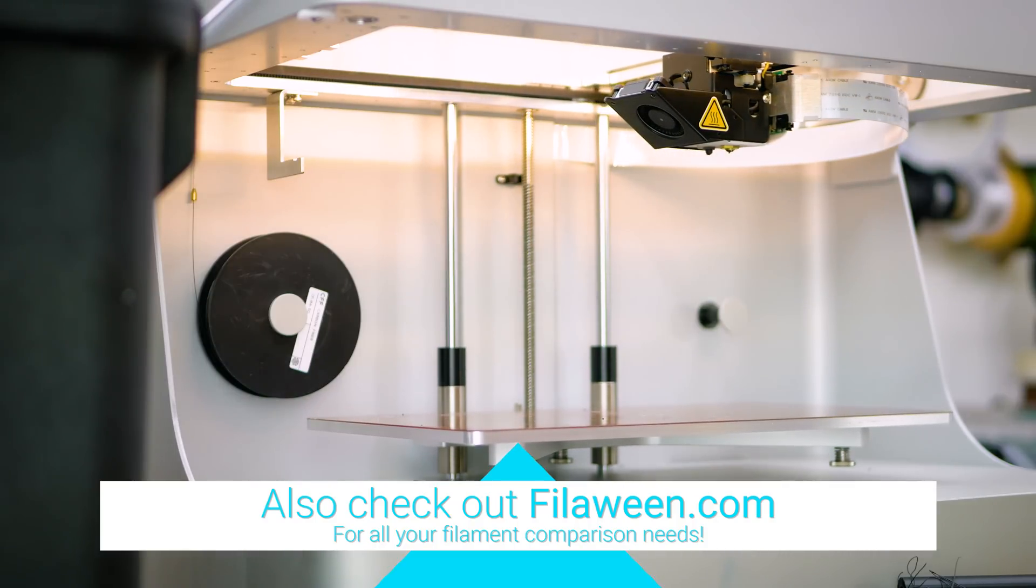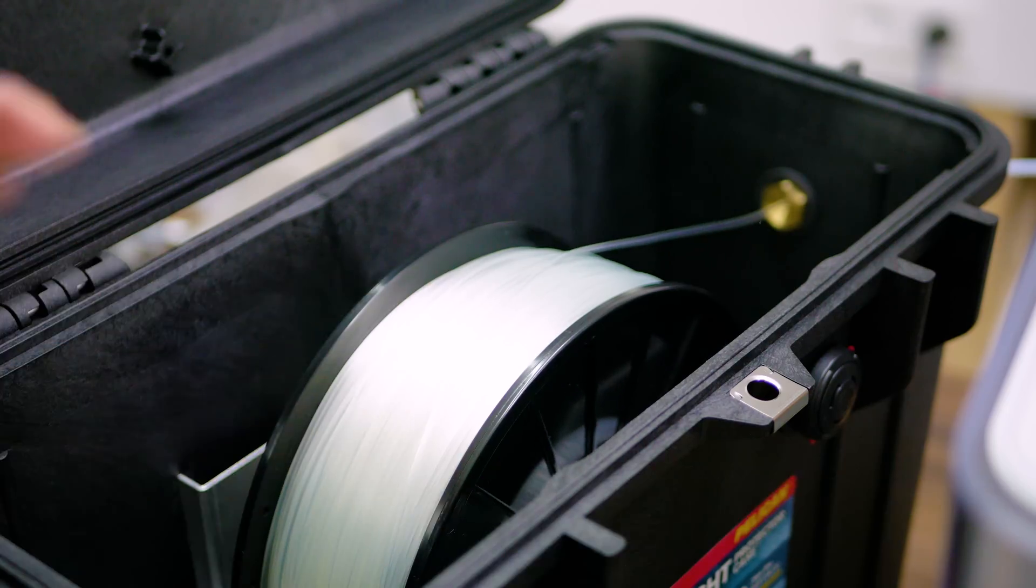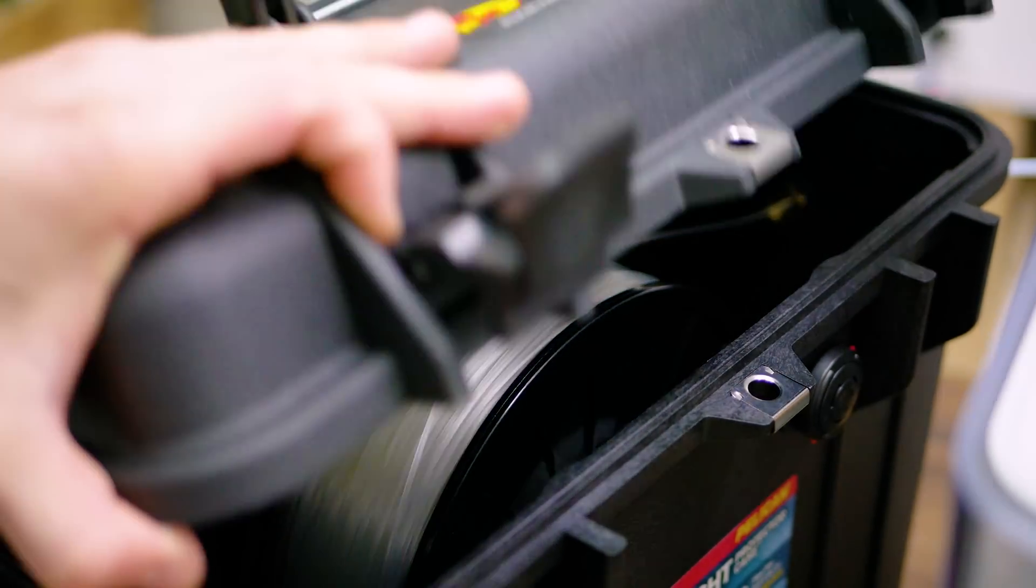covered with glue stick. Just like other nylon filaments, Onyx is very hygroscopic and needs to be kept in this airtight dry box.